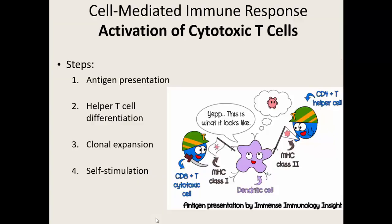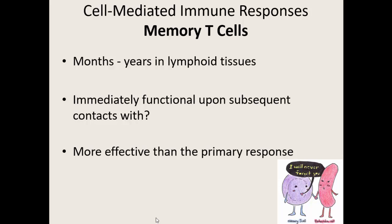So it's a four-step process of activating those cytotoxic cells as well as getting some of those helper T cells. Memory T cells will hang out in our immune system for months if not years. Those memory T cells will wake up and immediately become functional as soon as they encounter that epitope-antigen MHC complex again — as long as that MHC antigen on one of our cells is presenting the epitope that originally triggered them, they'll go active and have a more effective response than the first time.